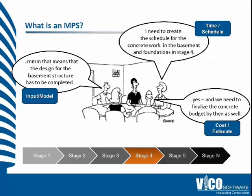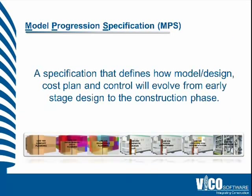Who's going to contribute what, at what time, and how it is going to be used at a later date. So that's where the model progression specification comes in. We've been alluding to it on the way through the presentation so far. It's a specification that defines how the model, or the design cost plan and control, will evolve from early phase stage design to the construction phase.